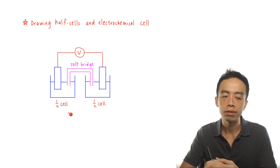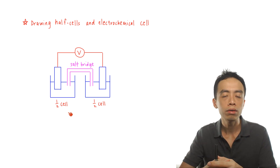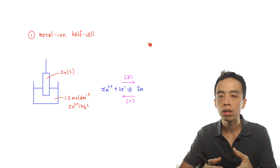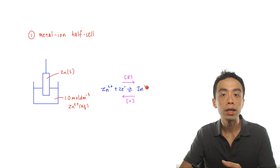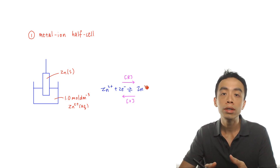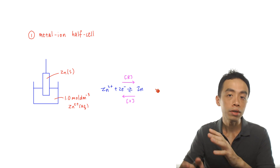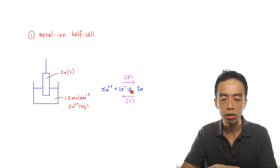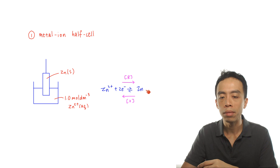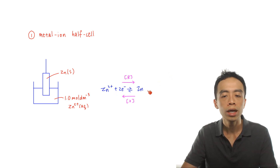The next thing we want to go through is drawing the half cells. We have three different types, and how the half cell looks depends on the physical state of the species involved. The first type is the metal-ion half cell, where this reversible electrode is set up between a metal in solid state and the ion in the aqueous state. Using Zn²⁺(aq) and Zn metal as an example: we write the half equation in reduction form, as found in the data booklet, with electrons on the left-hand side. So: Zn²⁺ + 2e⁻ → Zn. In the forward direction, Zn²⁺ gains two electrons and is reduced to Zn; in the reverse direction, Zn is oxidized to Zn²⁺ + 2e⁻.